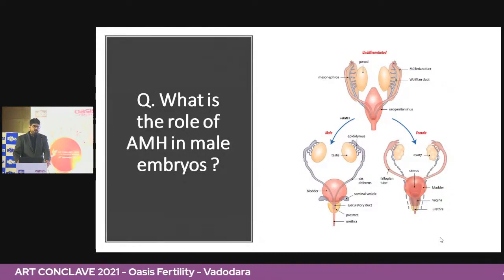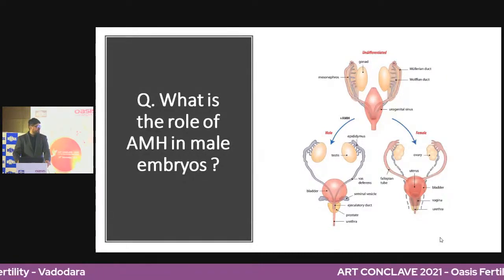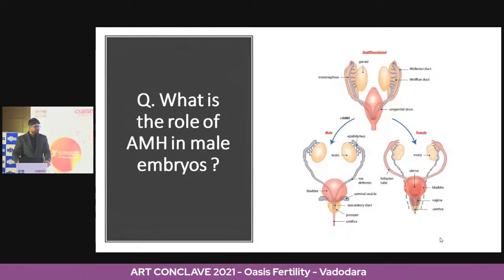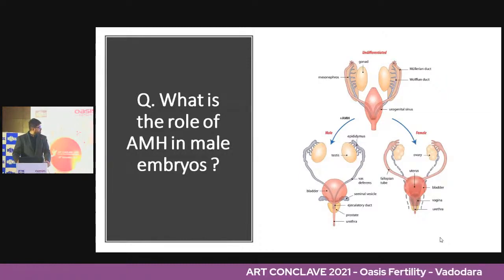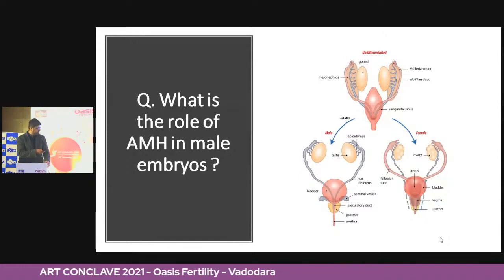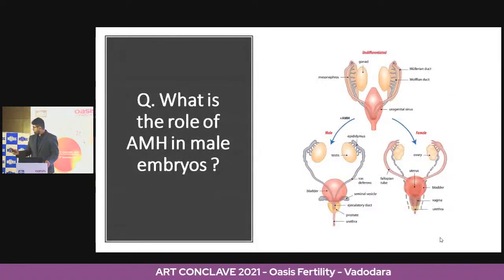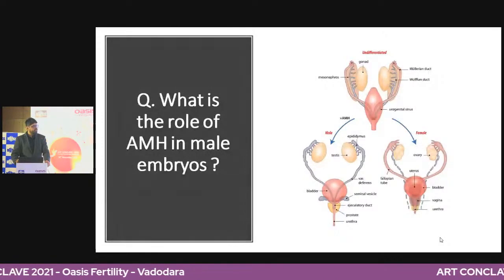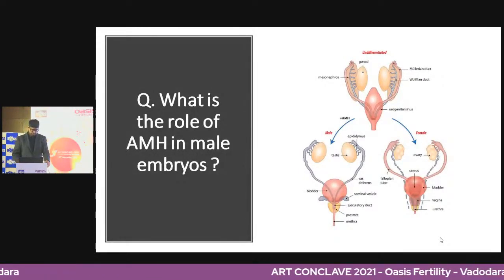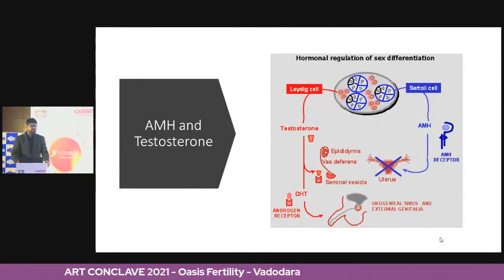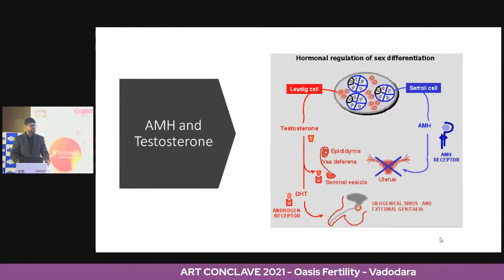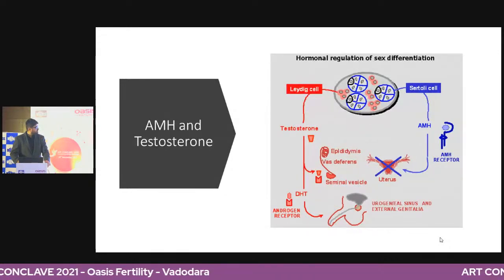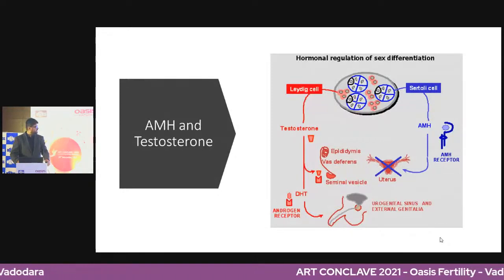AMH suppresses the Müllerian structures, with the pathway diverging towards the male side. If there is no AMH early on, the Müllerian structures are produced by default, going towards the female. There are two different cell lines in men. The Leydig cell produces testosterone, which produces the external genitalia. The Sertoli cell produces AMH, which suppresses the Müllerian structures, allowing the male internal genitalia to develop properly.